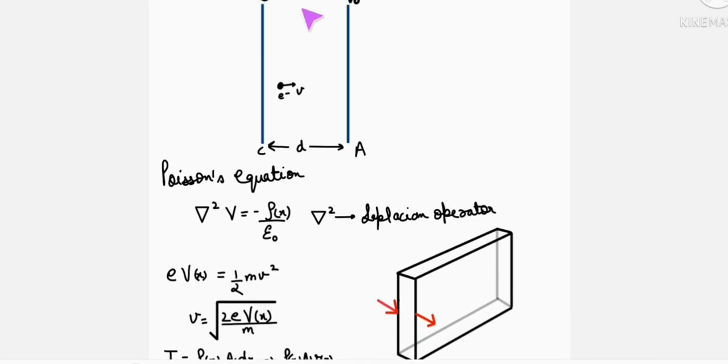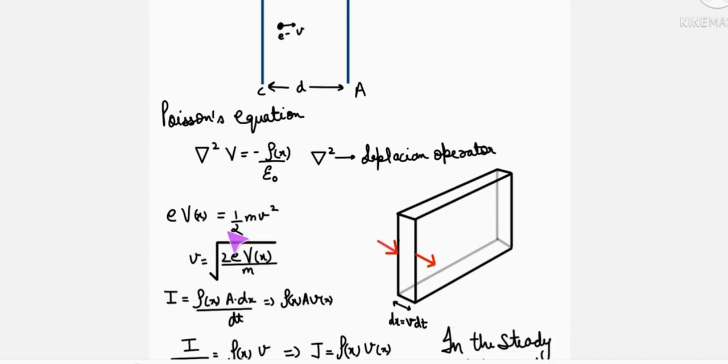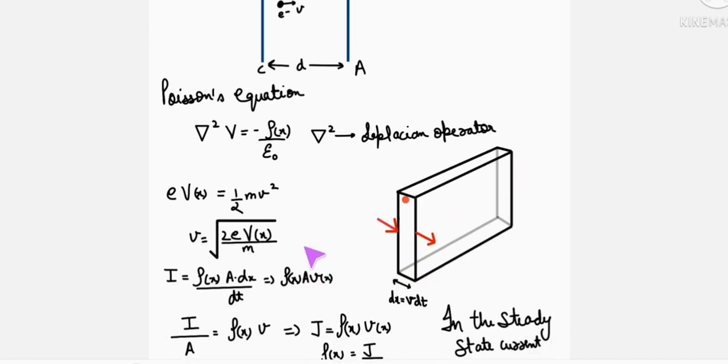Now charge flowing through this - as electrons are moving, current flows. So I can write the value of current as DQ by DT. Now DQ will equal rho, the space charge density, multiplied by the volume of this slice of width DX. So rho multiplied by A, the cross-section area, times DX, will equal rho A V.